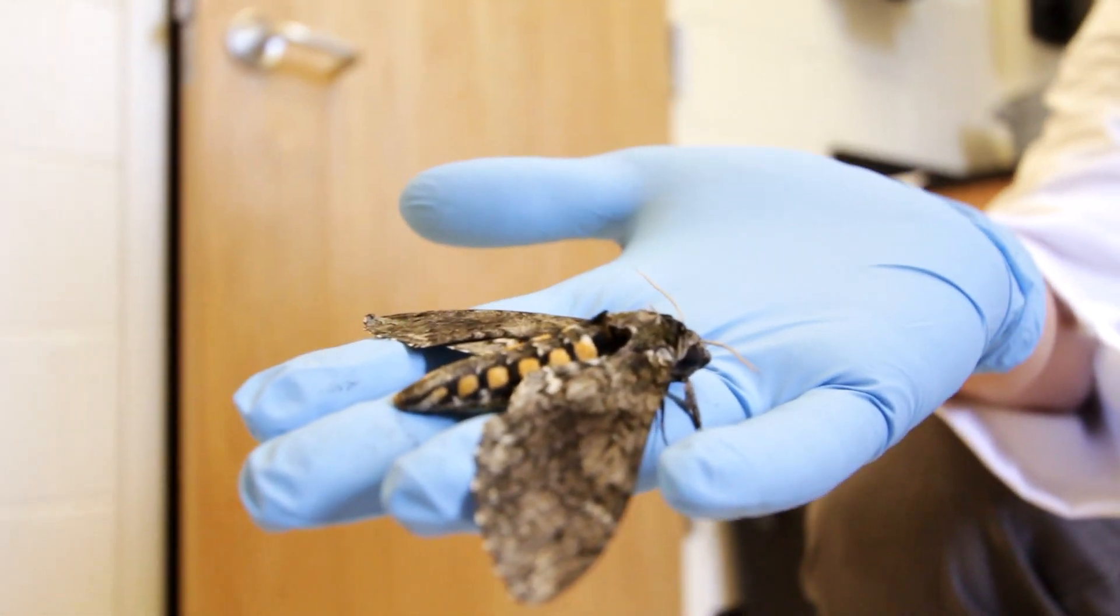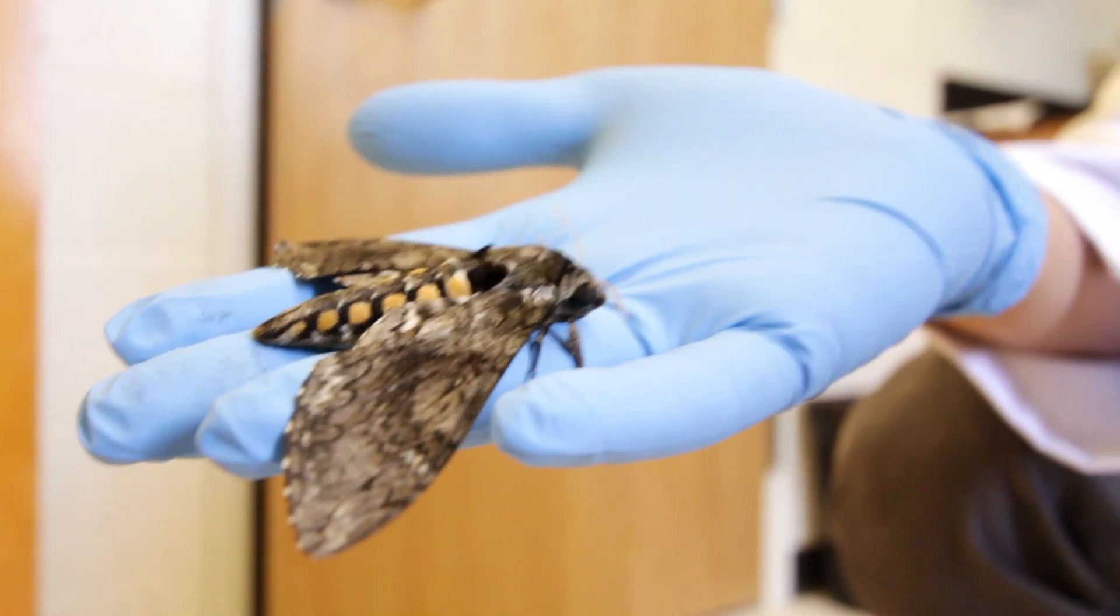Hawk moths are nocturnal or crepuscular flying moths. Crepuscular means that they fly at dusk or at dawn, so in very variable light environments.